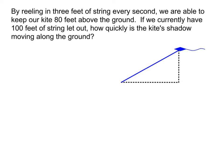So let's go and take those numbers from the original problem and put those into our picture. We are reeling in three feet of string every second. So that means that this length of string is what's going to be decreasing at that rate of three feet per second.